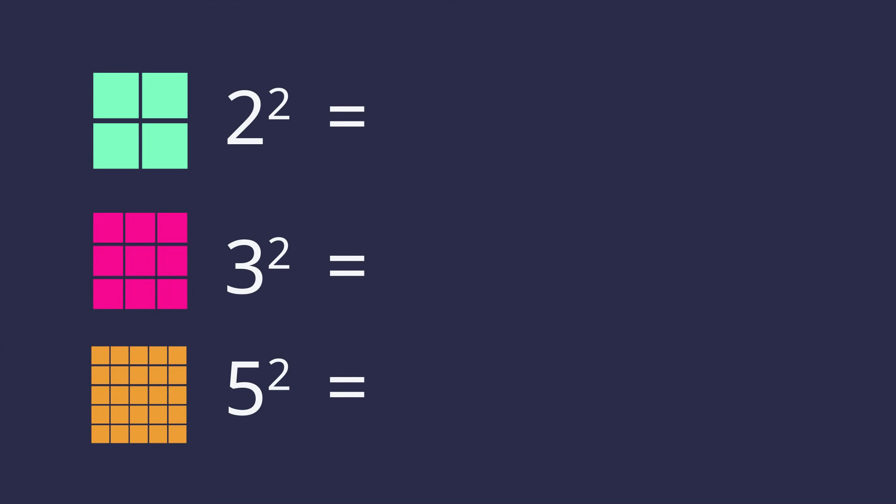Let's do these examples together using square tiles. 2 squared equals 2 times 2, which is 4.